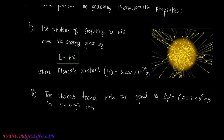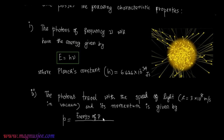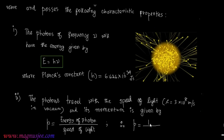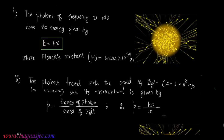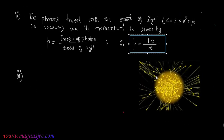Property 3: The linear momentum of a photon is given by p = E/c, therefore p = hν/c, where small c is the speed of light. This is the linear momentum of the photon.